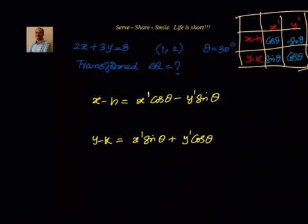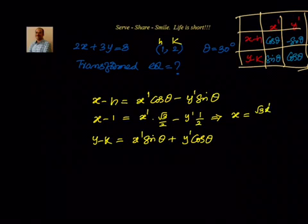Similarly, y minus k equal to x dash sin theta plus y dash cos theta. Now let's go back and substitute the values. We have x minus h, that is x minus 1, because h comma k is (1,2). x minus 1 equal to x dash into cos 30, that's root 3 by 2, minus y dash into sin 30, that is 1 by 2. Simplifying, we have x equal to root 3 x dash by 2 minus y dash by 2 plus 1.